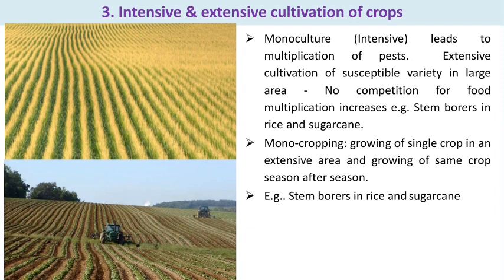The third cause is intensive and extensive cultivation. Monoculture leads to multiplication of pests. Extensive cultivation of susceptible crops over a large area with no competition results in increased pest multiplication. For example, stem borer in rice and sugarcane. Monocropping and extensive cultivation are responsible for pest outbreaks.